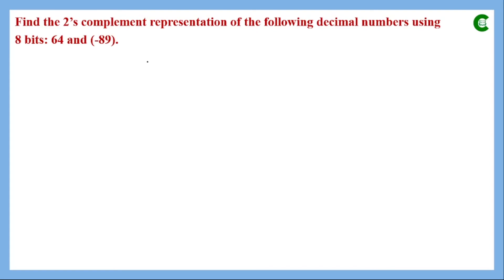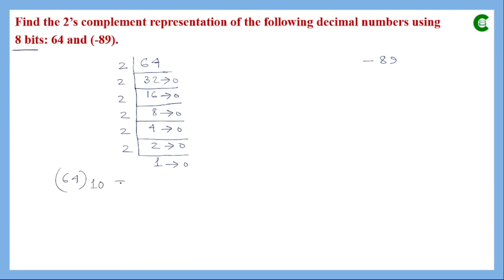Next we find the 2's complement representation of plus 64 and minus 89 using 8 bits. The binary equivalent of plus 64 is 1 0 0 0 0 0 0. Since the number is positive, MSB = 0. For a positive number, sign-magnitude, 1's complement, and 2's complement are all the same, so this is the 2's complement representation of plus 64.